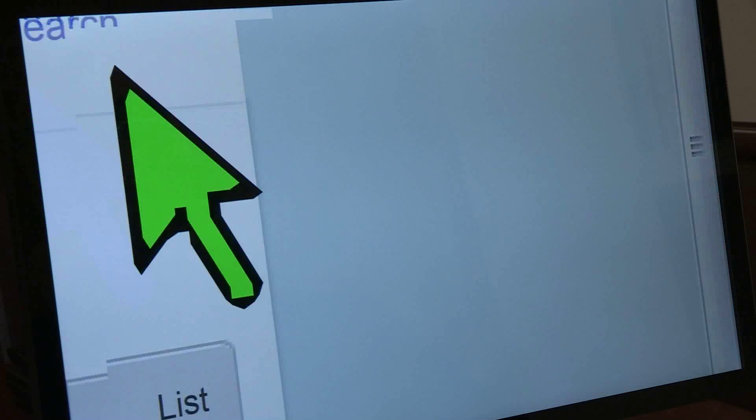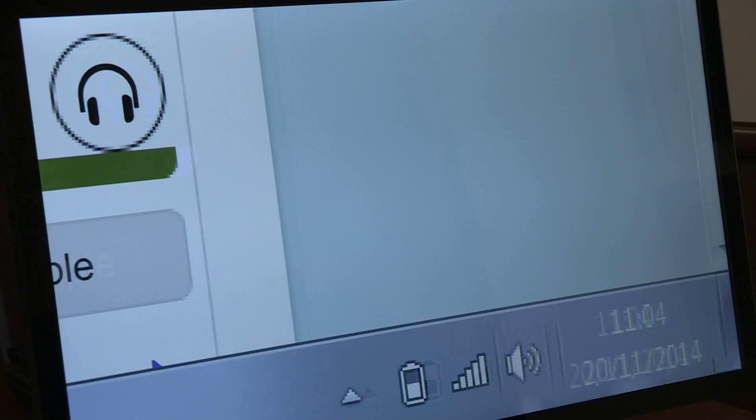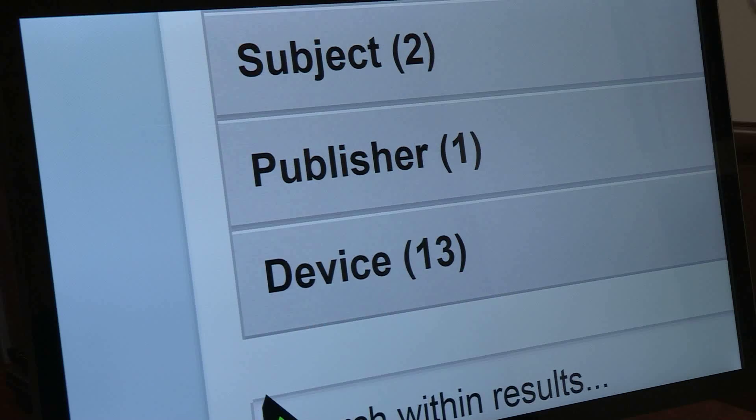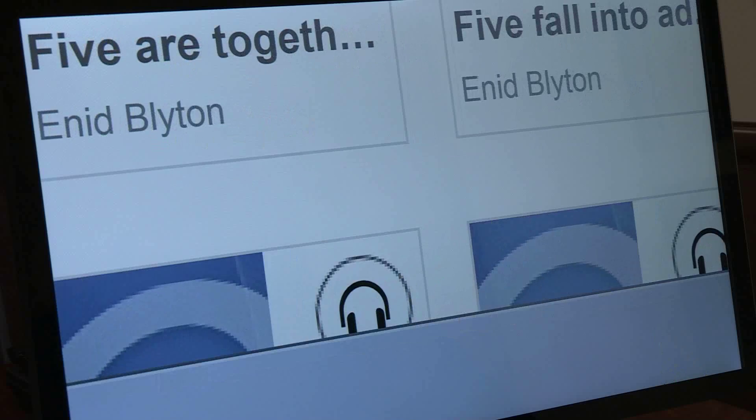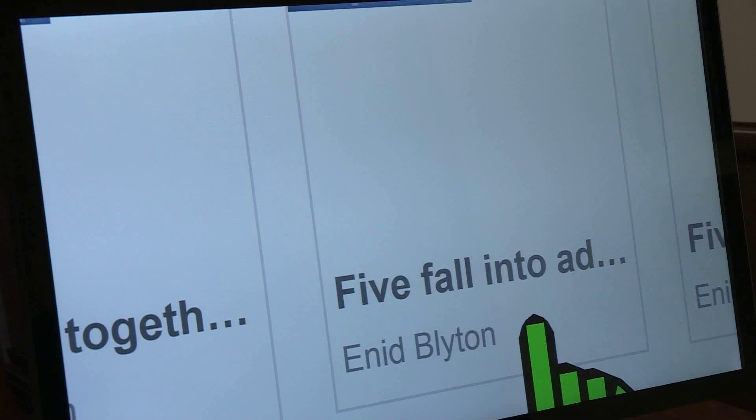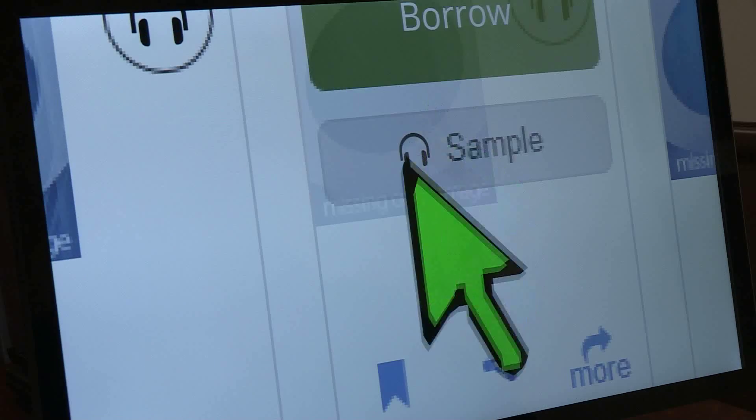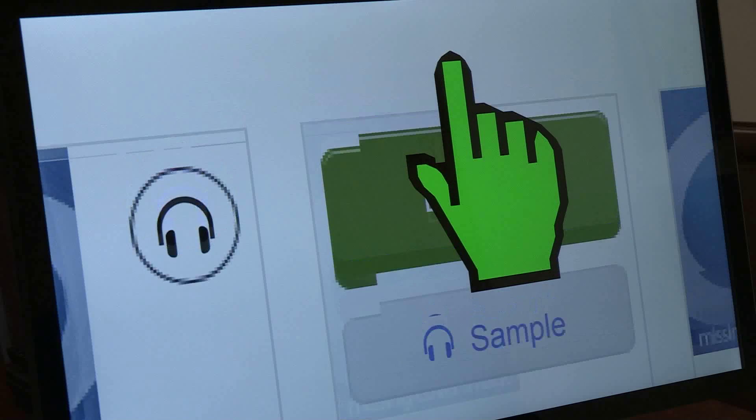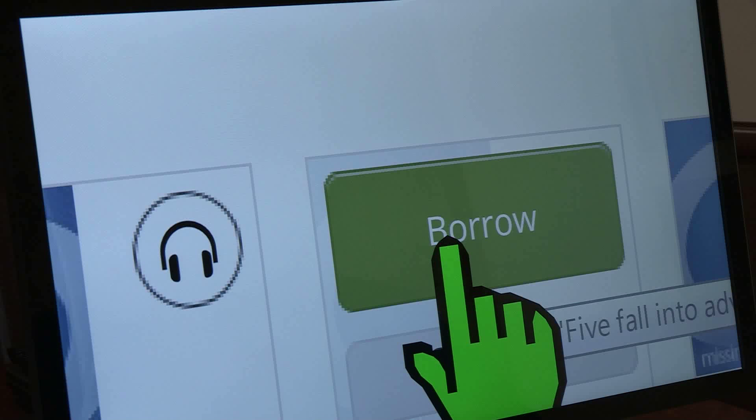It then comes up with a list of all the books that are available on RNIB Overdrive. Here we go - Five Fall into Adventure. I've listened to this fairly recently with my children. You click on the link and then you click on Borrow.